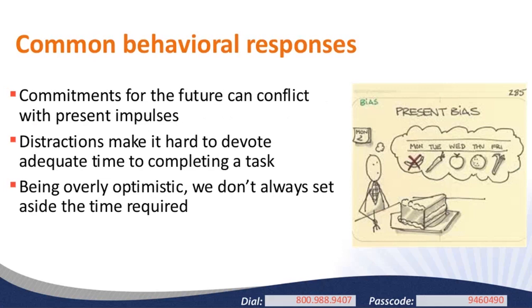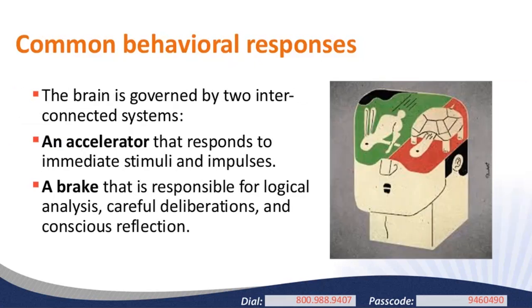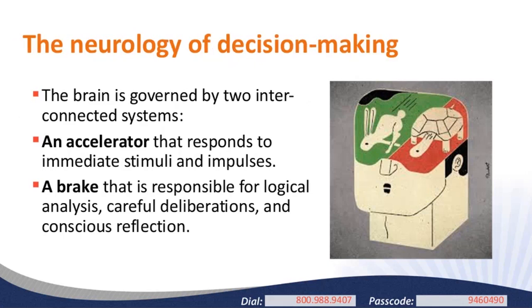The few minutes we've spent discussing how we approach complex tasks illustrates a variety of common behavioral issues we'll discuss during the rest of the webinar. One: the commitments we make for ourselves in the future often come in conflict with our present impulses and desires. Two: distractions make it hard to devote as much time as we want to completing a task. Three: we're sometimes overly optimistic about our ability to complete tasks and don't always set aside the time required.